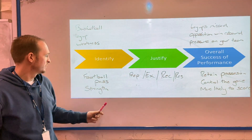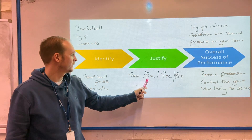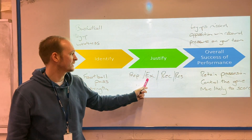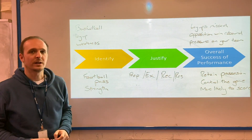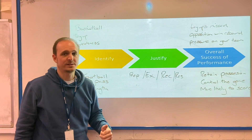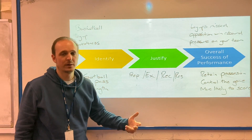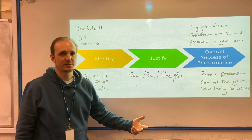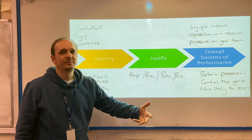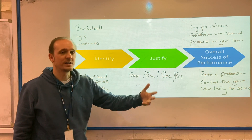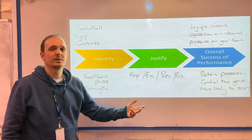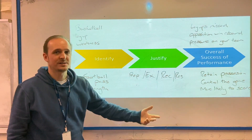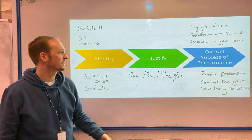For the football pass, we're going to look at it in terms of the execution phase. We might talk about the fact that the player, when making contact with the ball, is making good contact and getting the ball exactly where they want it to go. The passing is successful the majority of the time — you might say 75% or 85% of the time the pass goes where it's supposed to, or nine times out of ten.